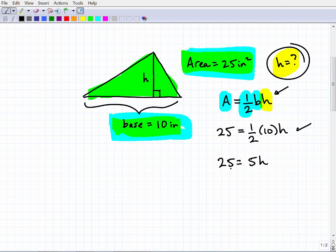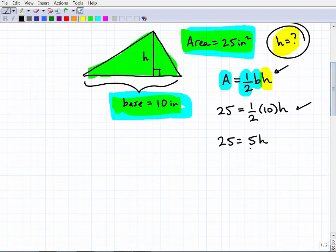To solve for h, I have to do what? Well, all I have to do is divide both sides of this equation by 5. And I have 25 divided by 5 is what? That is 5 is equal to h. So our height here is 5 inches. Five inches and that's it.